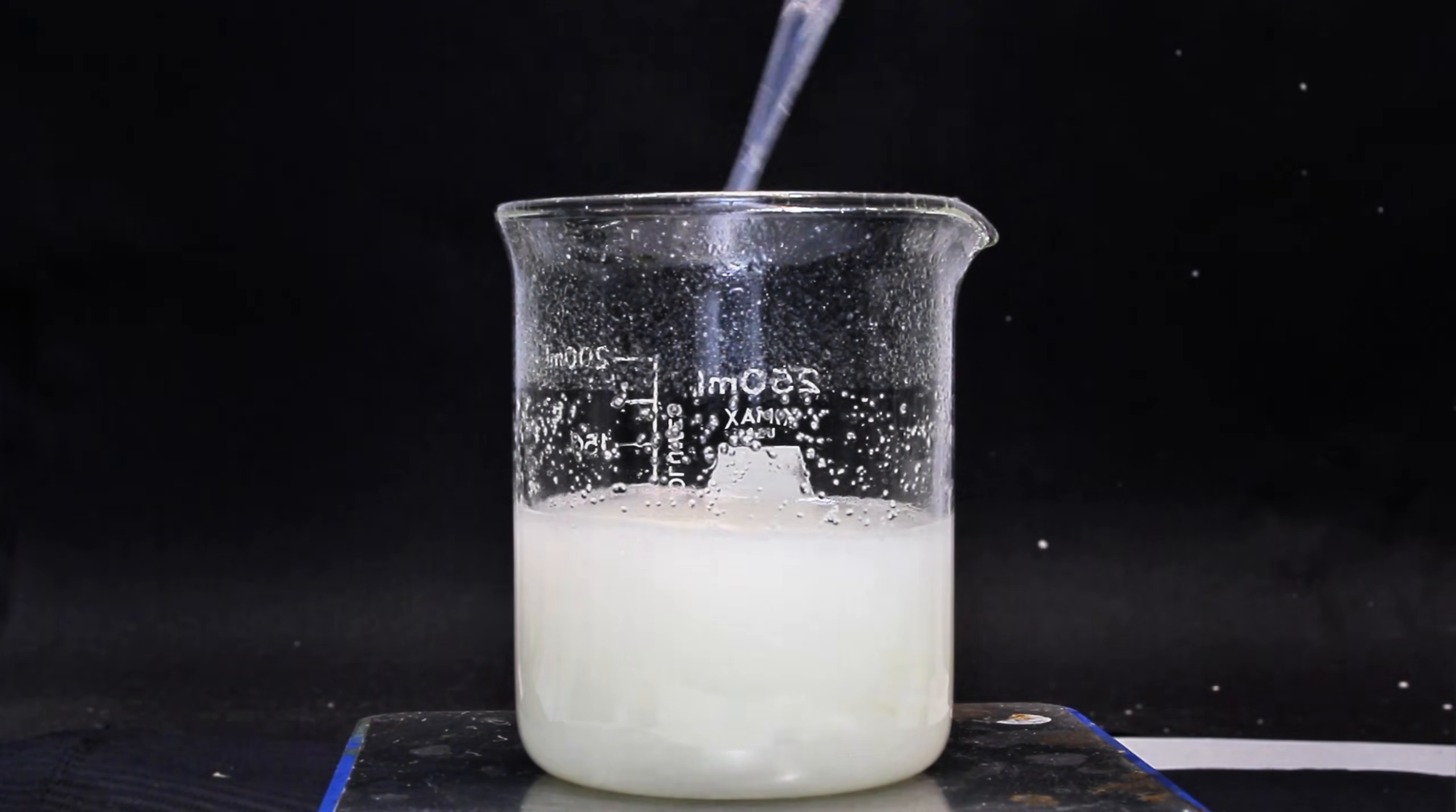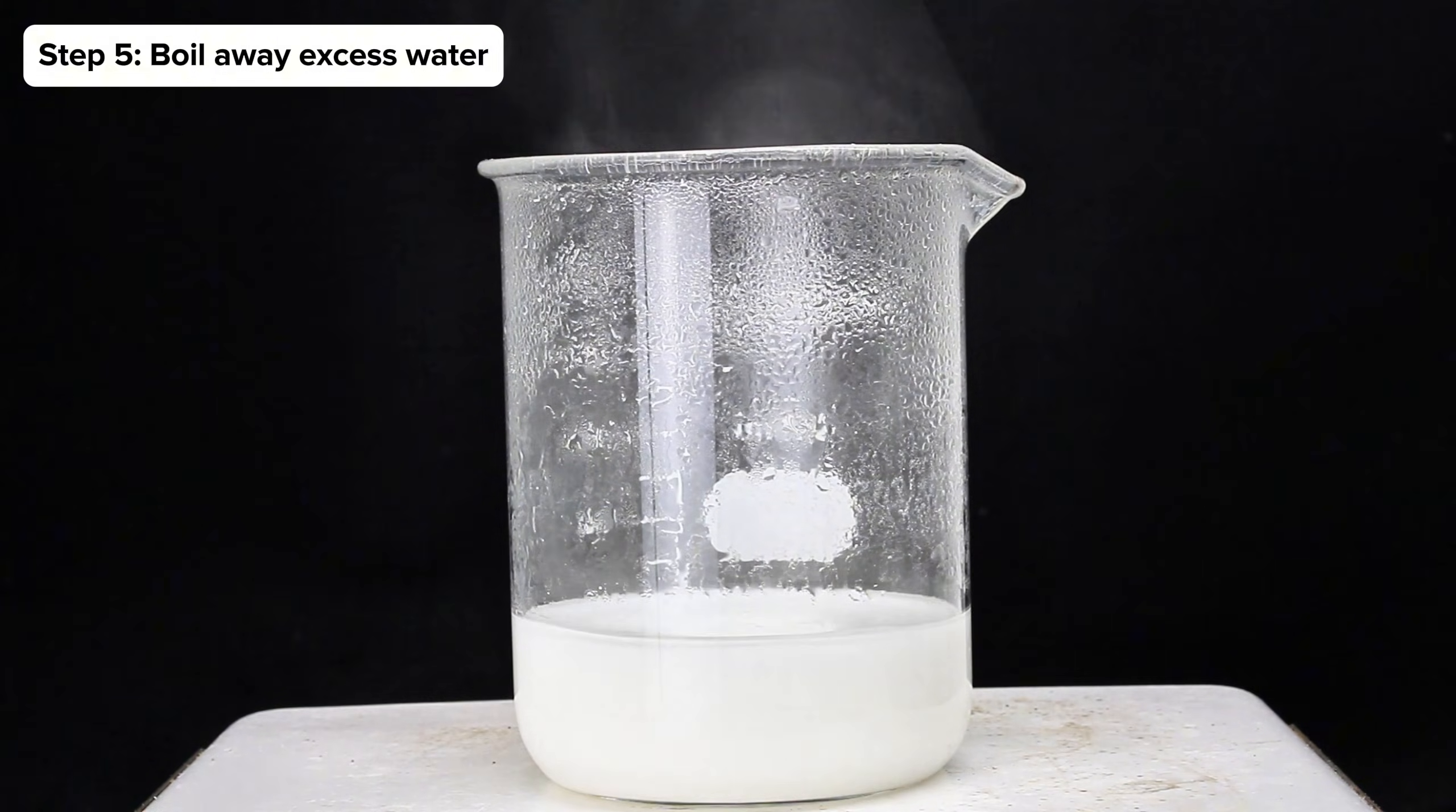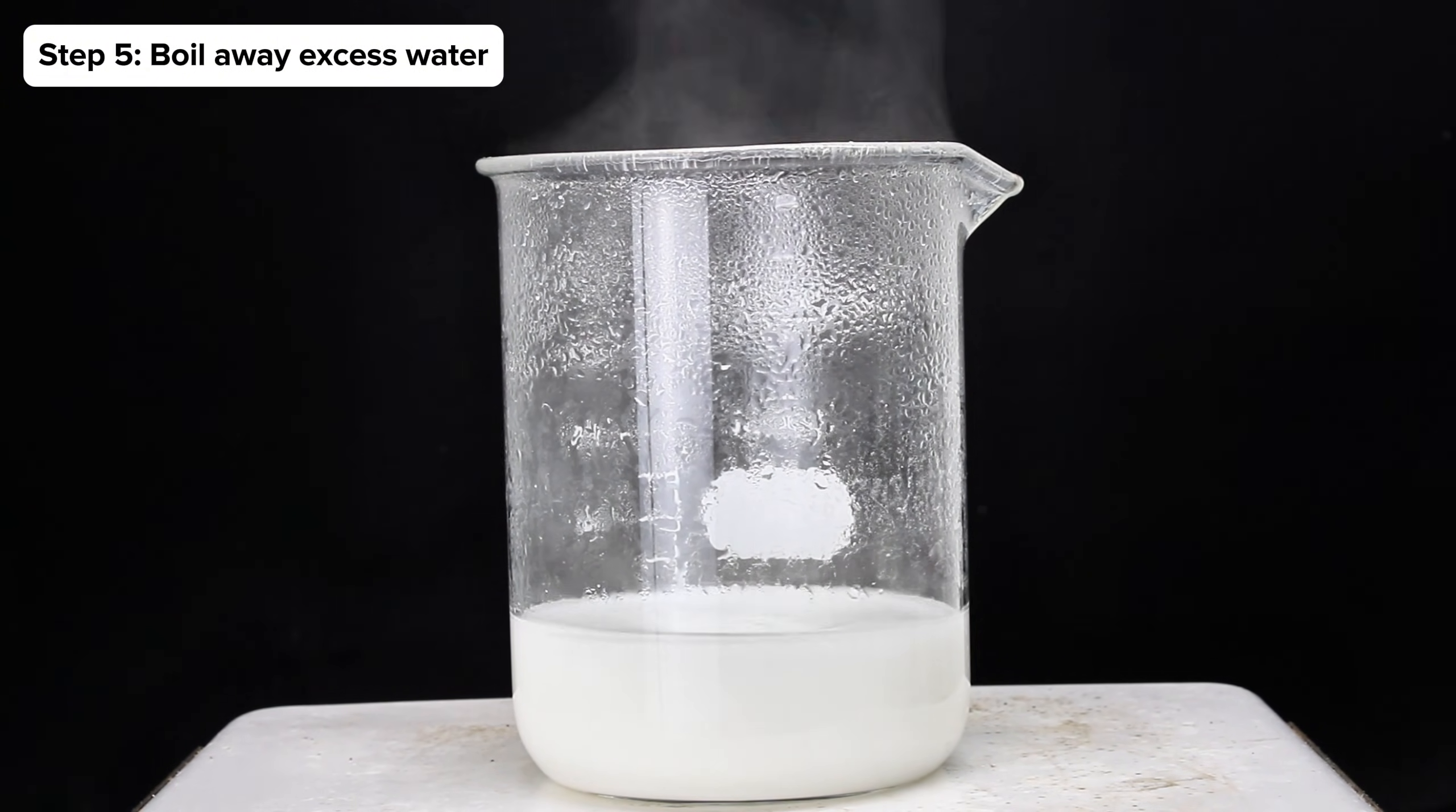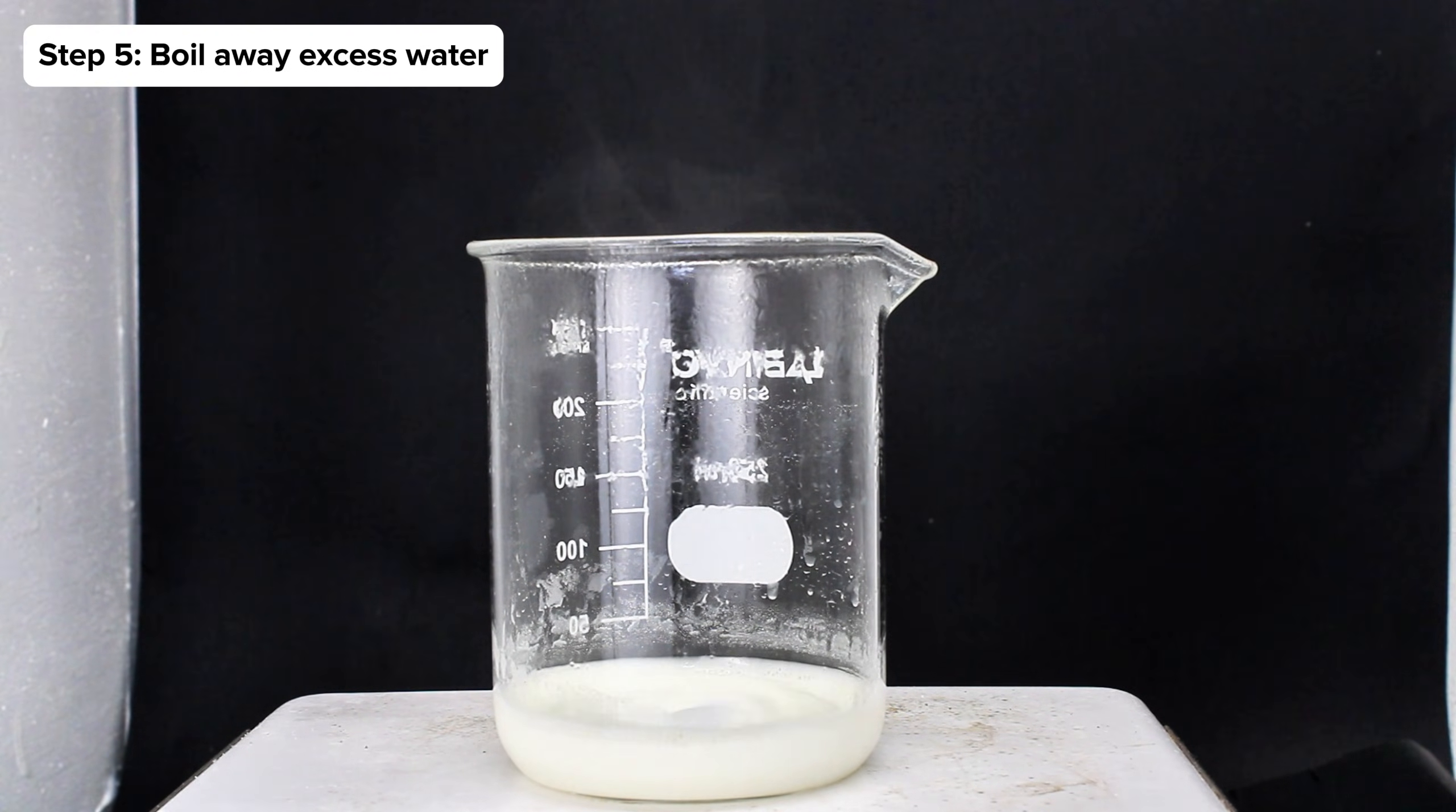Once the mixture stopped bubbling, I continued to add nitric acid until the pH was around 3. I then heated the mixture under constant stirring for a few hours to drive off all the excess water and continue reacting the elements to their respective nitrates.